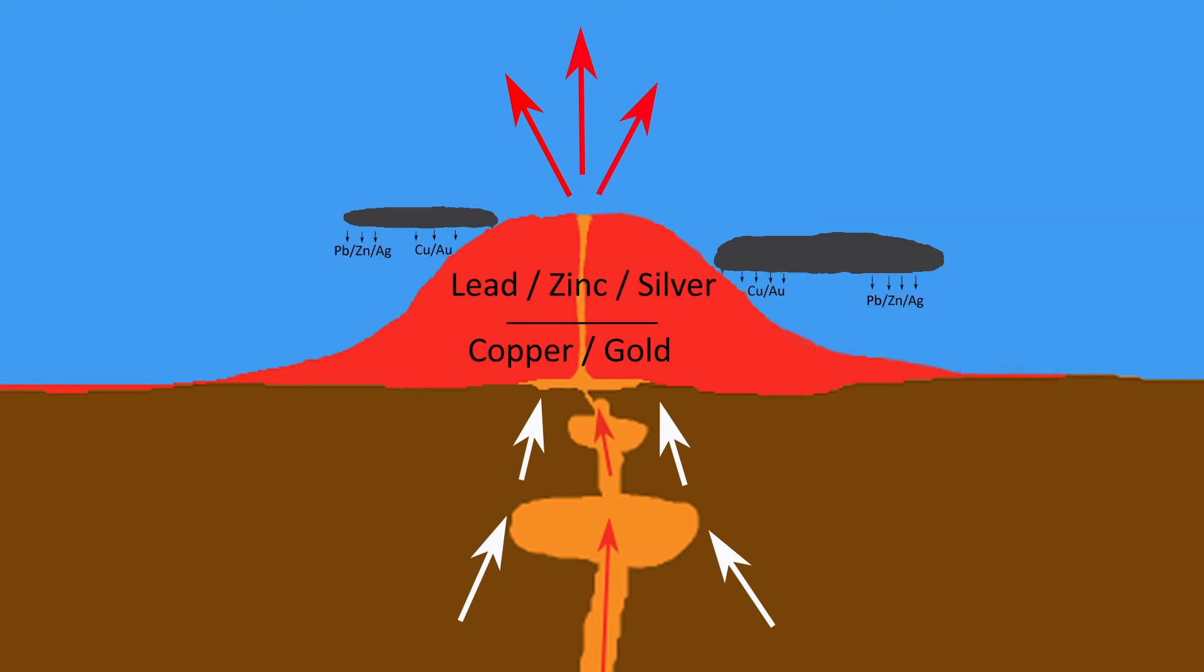As the hydrothermal fluids cool and encounter changes in chemistry within the volcanic pile and in the seawater, they begin to drop out the dissolved metals. Copper and gold are the first, then lead, zinc, and silver as the fluids continue to cool. This creates zonation of the metals. Copper and gold deposits are located deeper in the pile or closer to the vent, while the other metals are deposited higher up in the pile and further from the vent.